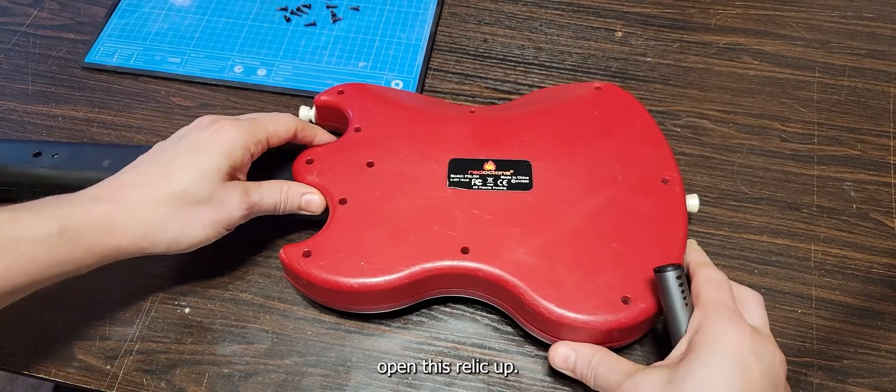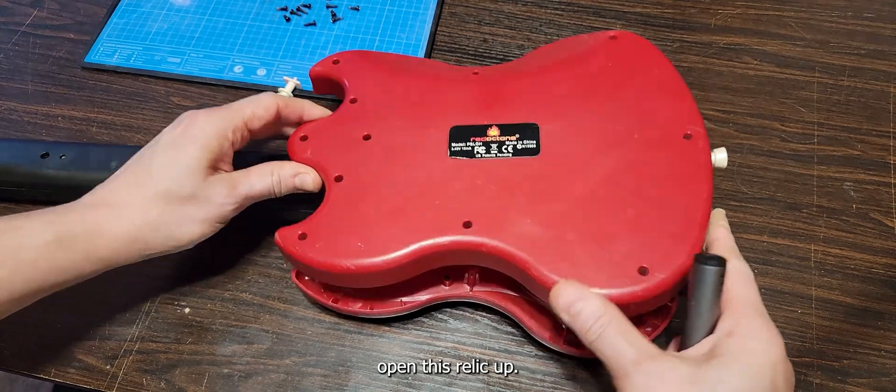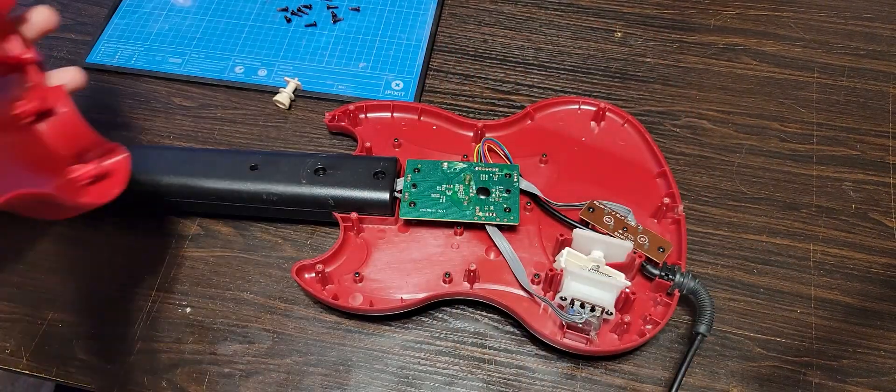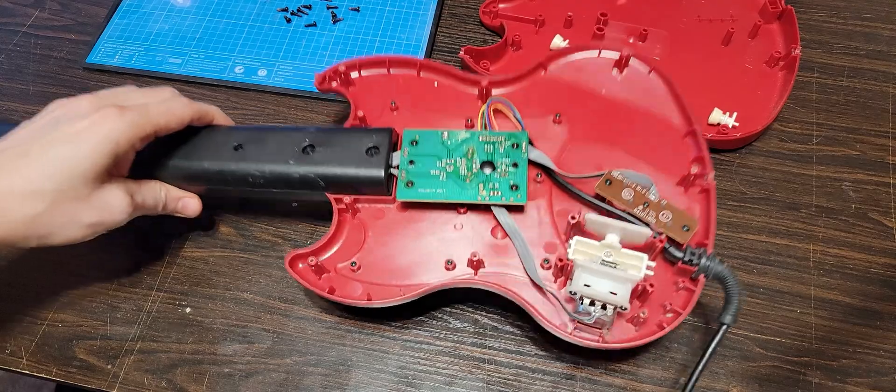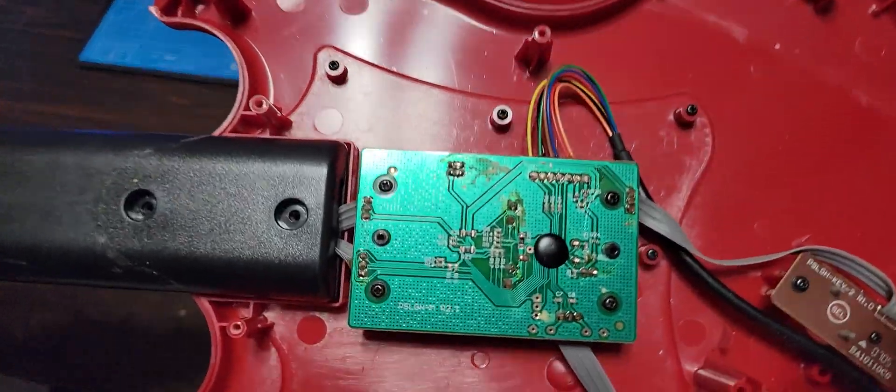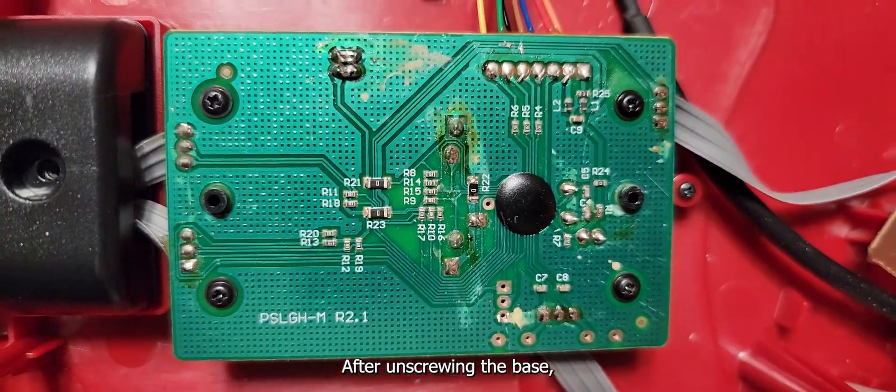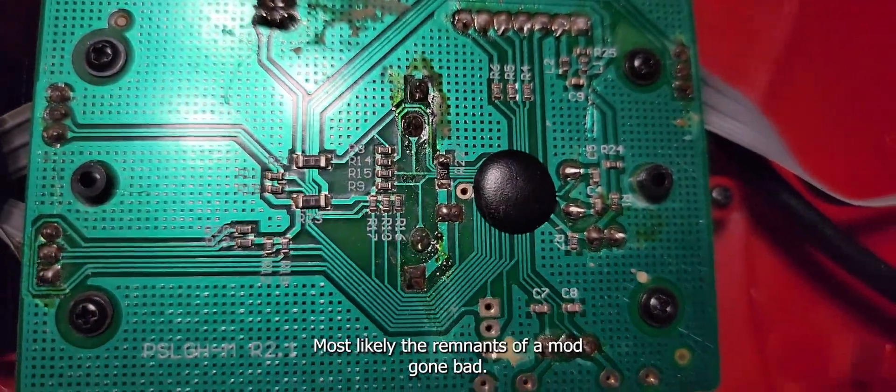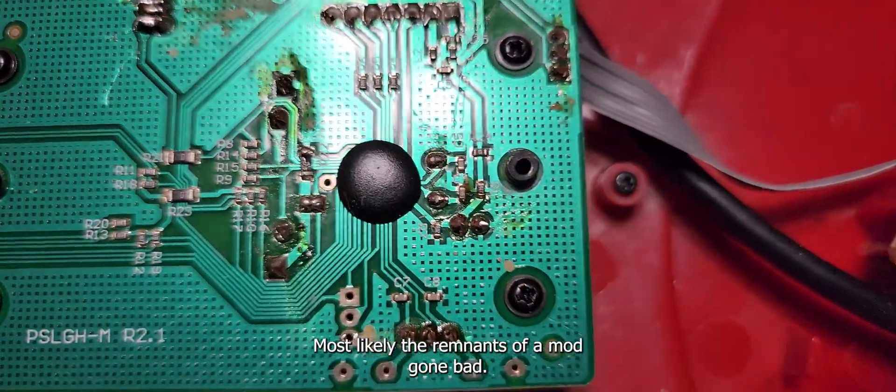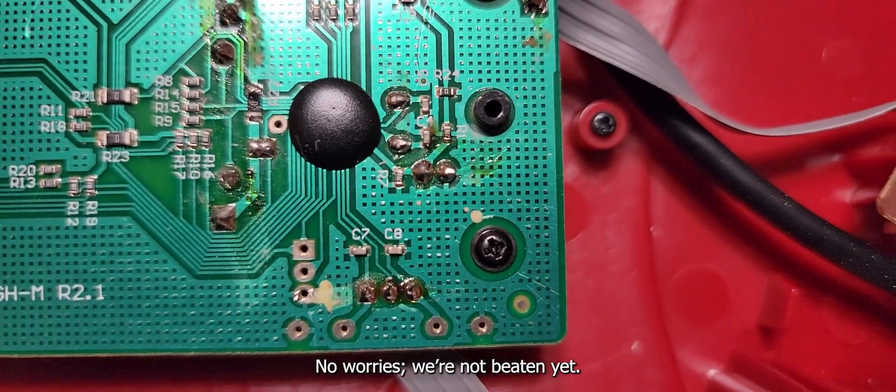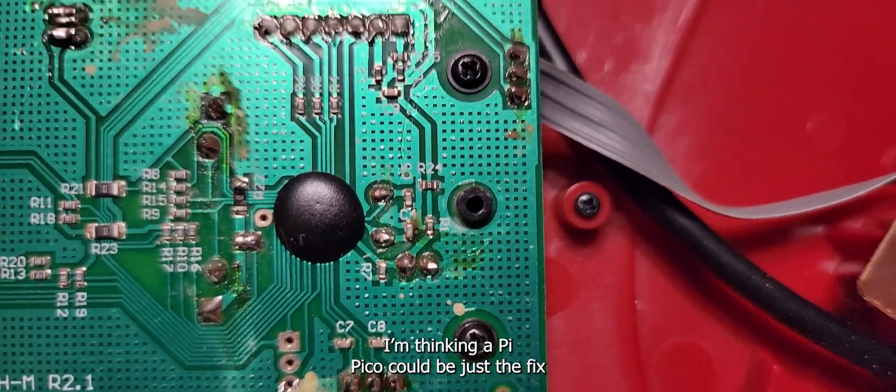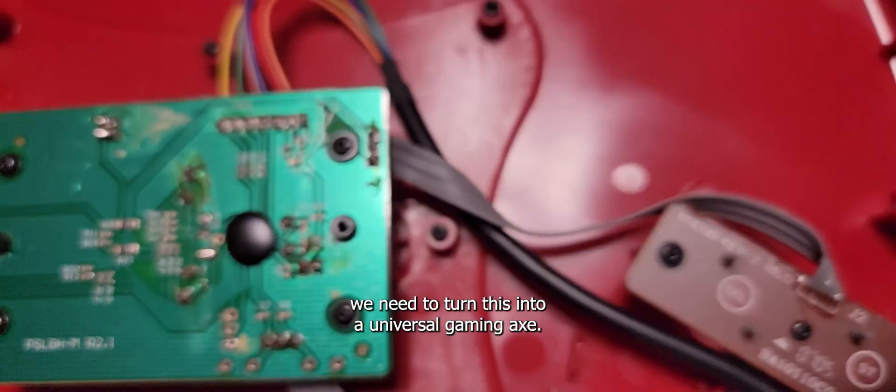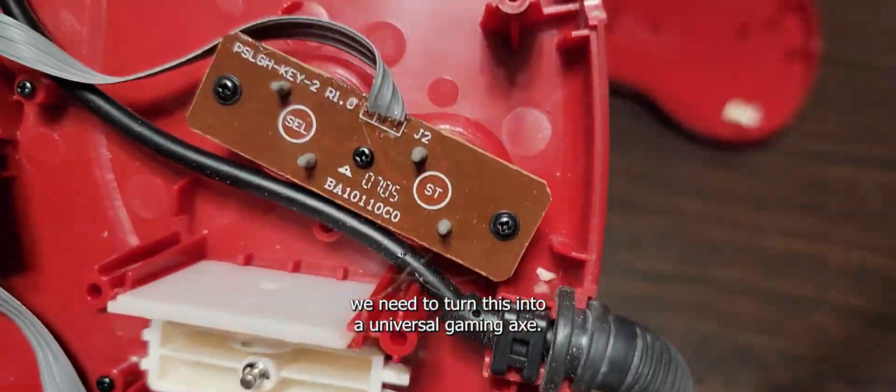First things first, let's open this relic up. After unscrewing the base, I found some suspicious looking damage on the main PCB, most likely the remnants of a mod gone bad. No worries, we're not beaten yet. I'm thinking a Pi Pico could be just the fix we need to turn this into a universal gaming axe.